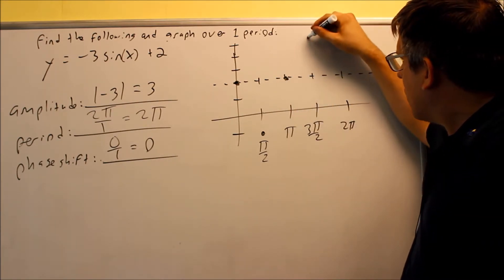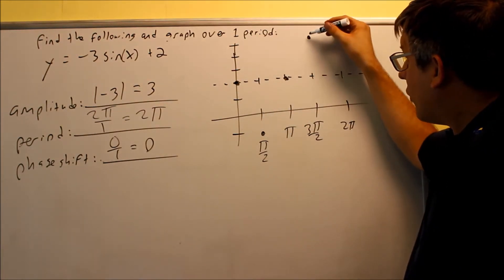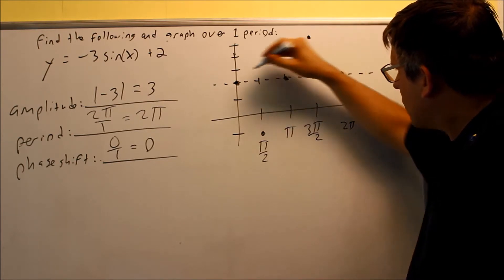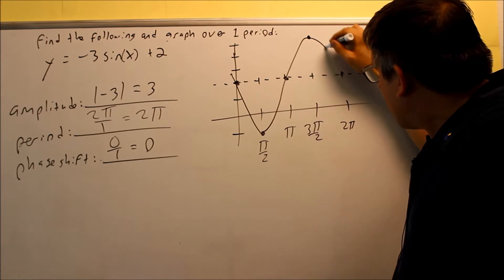Next key point, it's going up here to 5, and coming back down to here. The graph itself is going to look something like this.